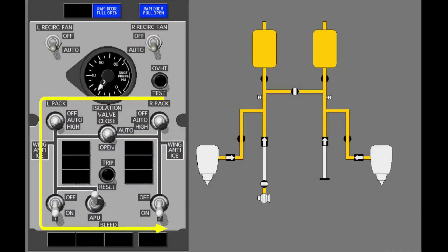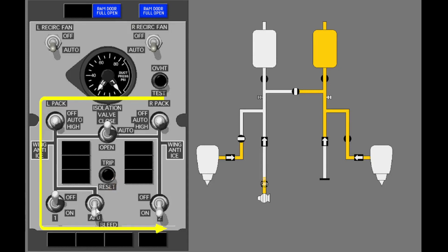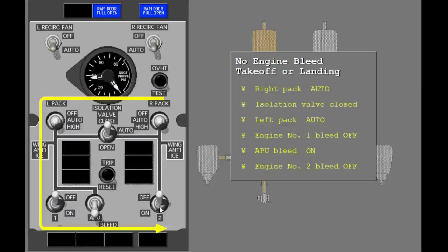Just before takeoff or when below 10,000 feet, you set the switches for no-engine bleed with a letter C pattern on the air conditioning bleed air controls panel. Make sure the right pack is in auto. Now close the isolation valve. Make sure the left air conditioning pack is in auto. Turn off the number one engine bleed. Turn on the APU bleed. Turn off the number two engine bleed. This sequence of steps has turned off the bleeds from each engine while the flow of bleed air continued to at least one pack.